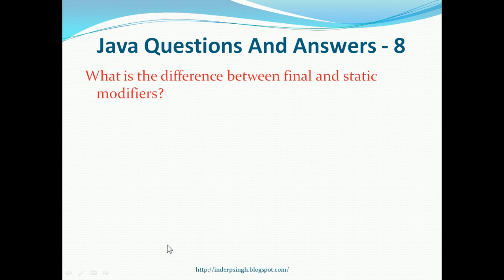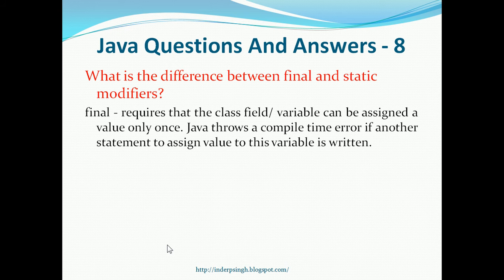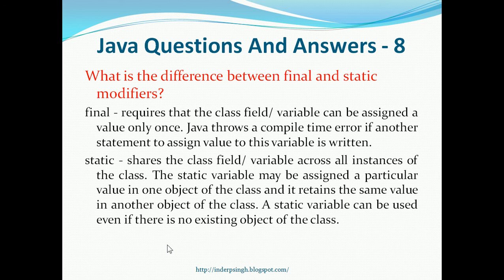Question 8. What is the difference between final and static modifiers? Final requires that the class field or variable can be assigned a value only once, and that is the final value. Java throws a compile time error if another statement to assign value to this variable is given in the program. Static shares a class field or variable across all instances of the class. The static variable may be assigned a particular value in one object of the class and it retains the same value in all other objects of that class. A static variable can be used even if there is no existing object of the class.